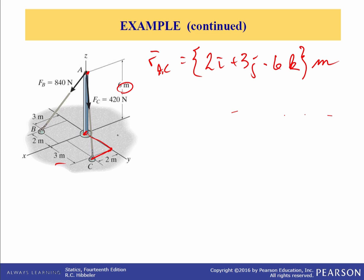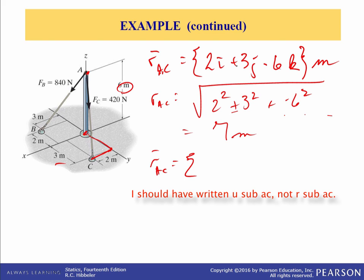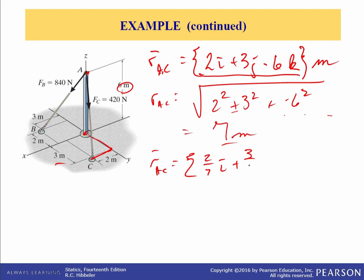Now we want the unit vector between A and C, so we need the magnitude of r_AC: the square root of 2 squared plus 3 squared plus (minus 6) squared, which comes out to 7 meters. So the unit vector u_AC equals this vector divided by its magnitude 7: that's 2/7 i plus 3/7 j minus 6/7 k. That's a unit vector so it has no dimensions — the meters on top cancel with the meters on the bottom. Unit vectors have length 1.